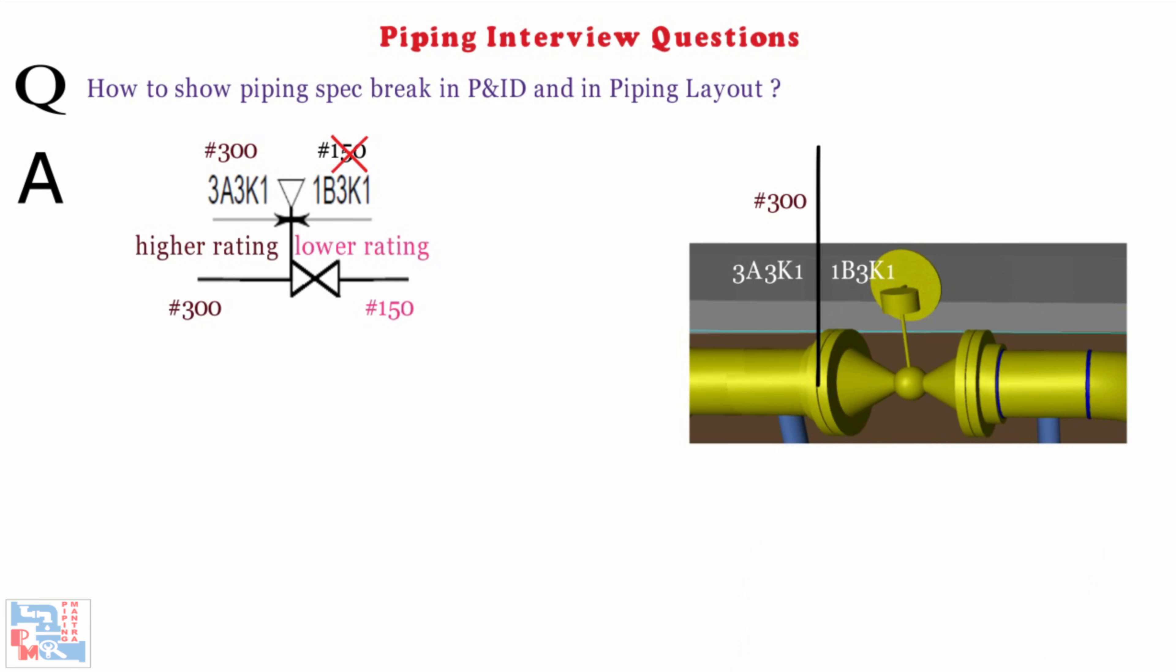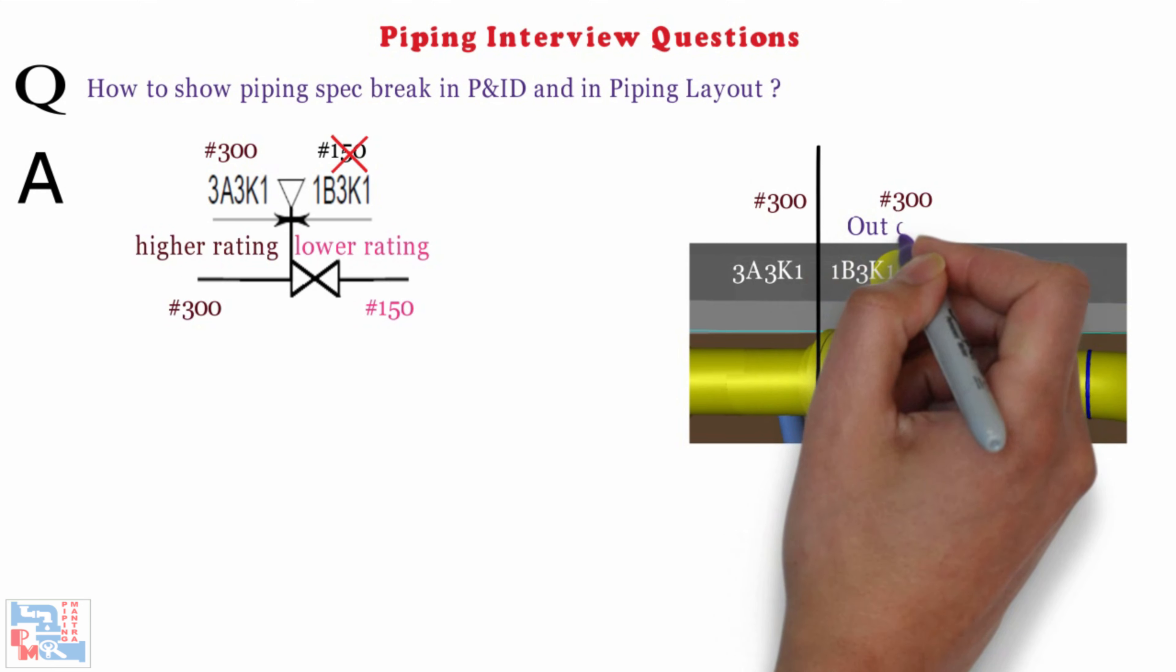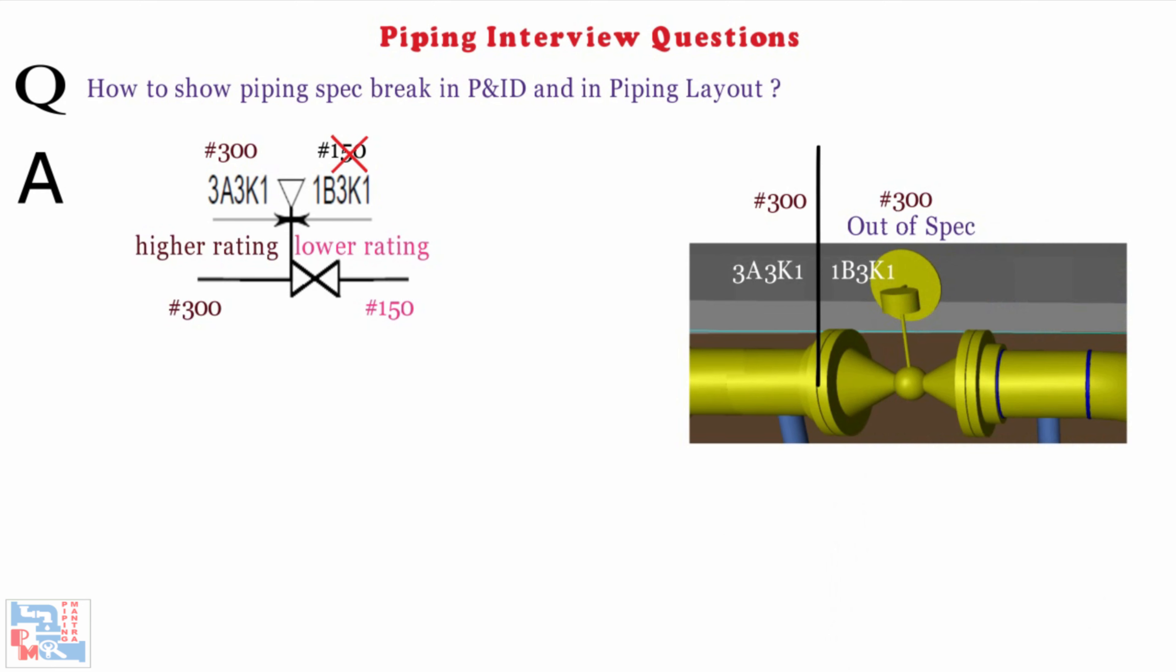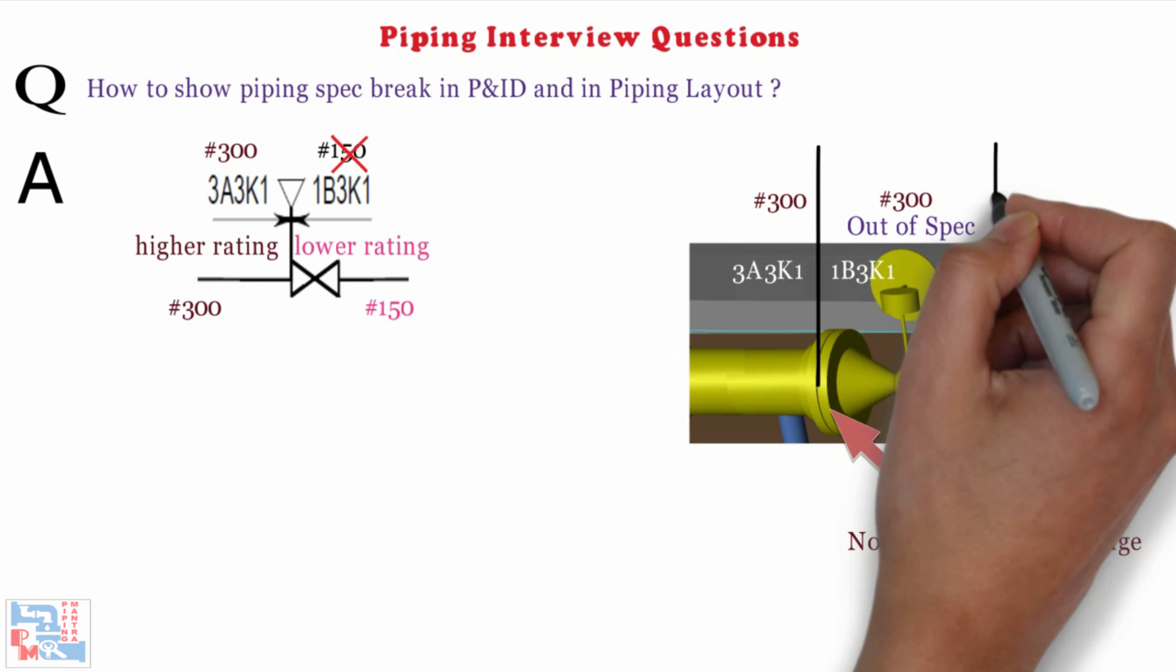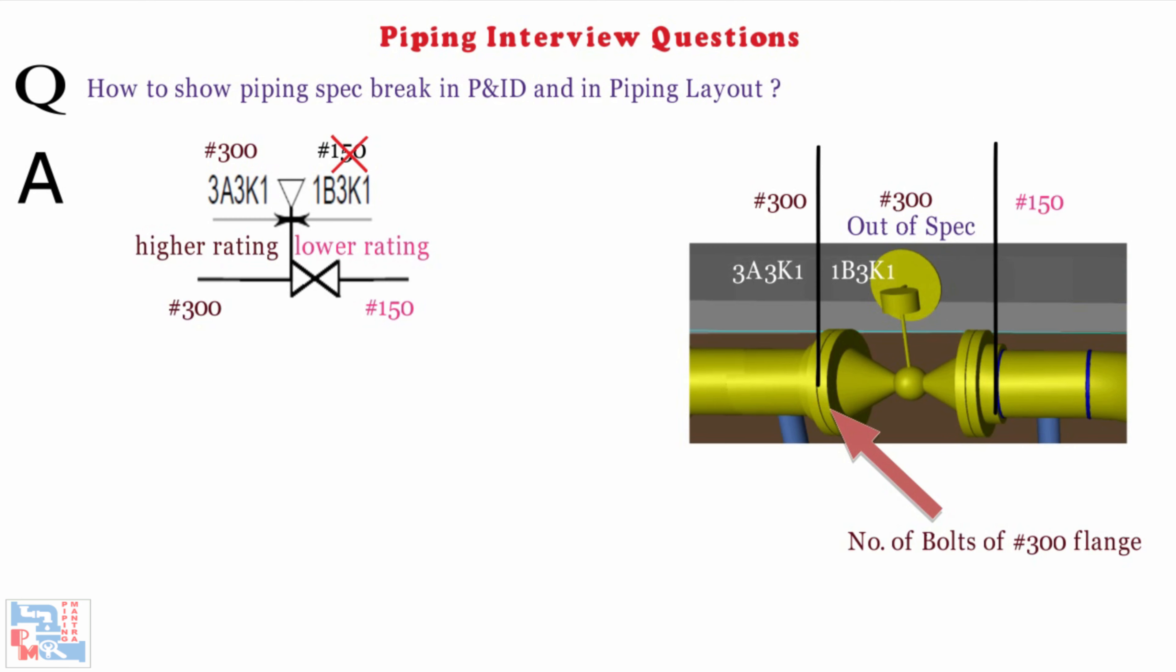However, the connecting flange is 300, so we will have 300 rating valve in 1P3K1 spec which will be called out as out of spec valve. Same, we will do with flange connected to the other end of the valve to match the number of bolts in 300 rating flange. After that flange, technically we have 150 rating.